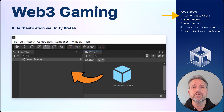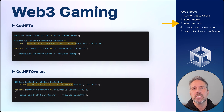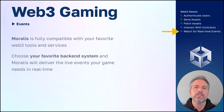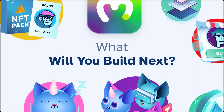To authenticate users with Morales, use the Authentication Kit prefab — drag that into your scene and your authentication is handled. To send assets, use Execute Contract Function, for example to mint an NFT. To fetch assets from the blockchain, Morales offers many options including GetNFTs and GetNFT Owners. To interact with contracts, Morales offers RunContractFunction for read operations and ExecuteContractFunction for read and write operations. To watch for real-time events, Morales is fully compatible with your favorite Web3 tools, letting you connect to your backend and receive live events in real-time. Now that we've been inspired by that game design and seen how Morales empowers game development, what will you build next?